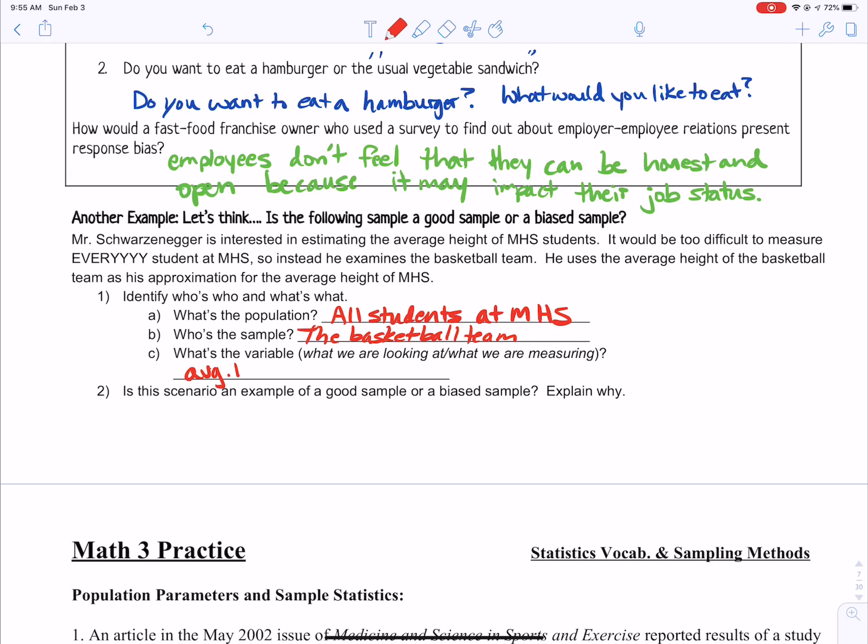And then it says, is this scenario a good sample or a biased sample? Explain why. It is definitely biased, because the basketball team tends to be above average height. They are not representative of the population. So they tend to be above average height and are therefore not representative of the population.